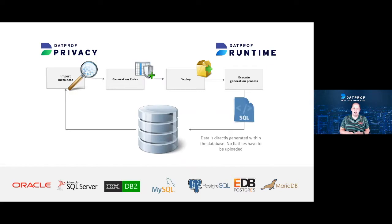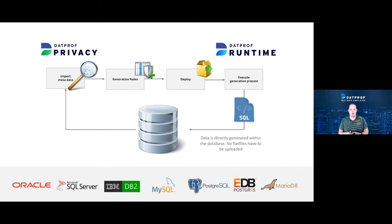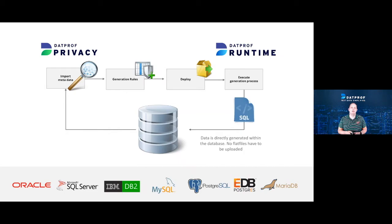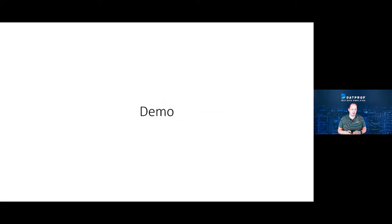Typically, how you would configure it is by going into Privacy, creating a new template or using your masking template, and importing the metadata of your database — tables, columns, data types, and relationships between tables. Then you create different generation sets for the test cases you have, each consisting of a couple of tables required for a specific test case. Next you can deploy it directly from Privacy, connecting to the database and inserting the generated data, or you can choose to deploy it using Runtime — generating a package, uploading it into the web UI, and running it from Runtime or integrating it with your CI/CD pipeline via the Runtime API.